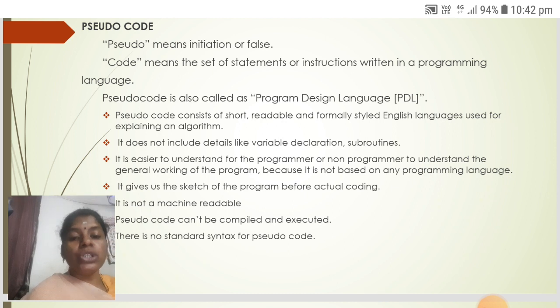Pseudocode consists of short, readable and formally styled English language used for explaining an algorithm. It does not include details like variable declaration subroutines. It is easier to understand for the programmer or non-programmer to understand the general working of the program because it is not based on any programming language. It gives us the sketch of the program before actual coding.